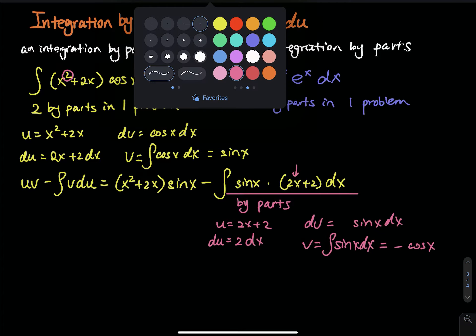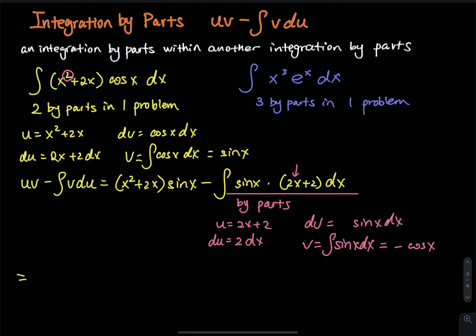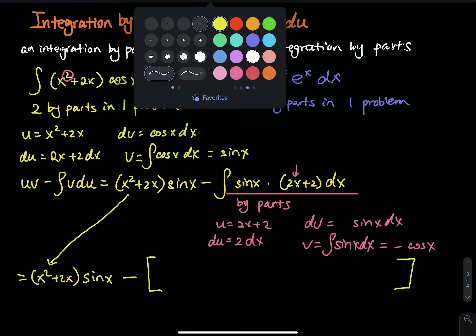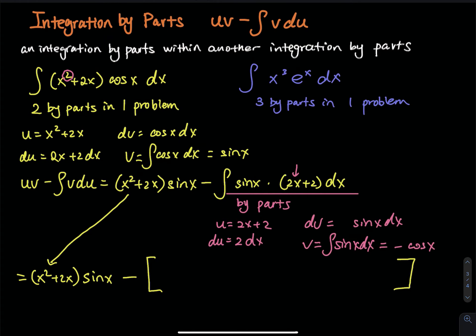So now let's bring all the pieces together. First of all, we have x squared plus 2x times sine of x, and then minus the by parts. Since we have a minus, I am going to put every component of the second by parts inside a square bracket. First we have uv.